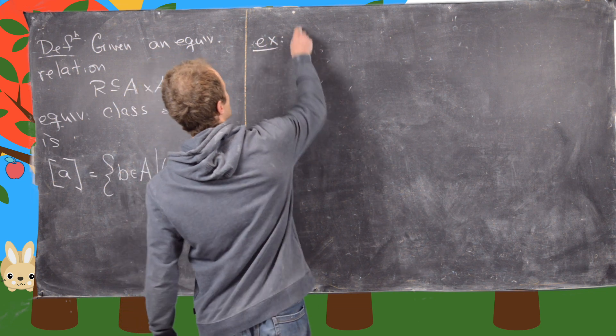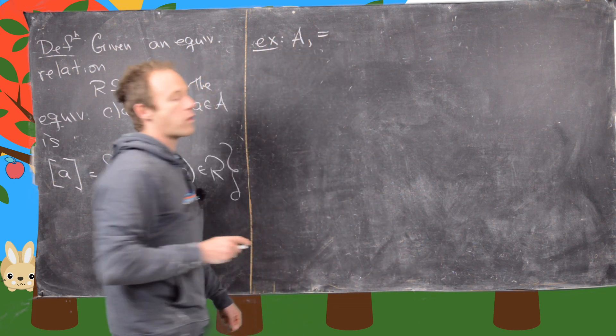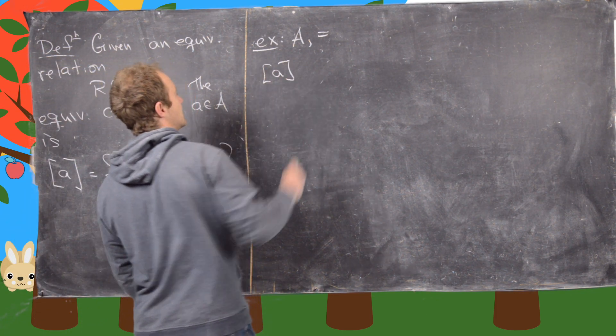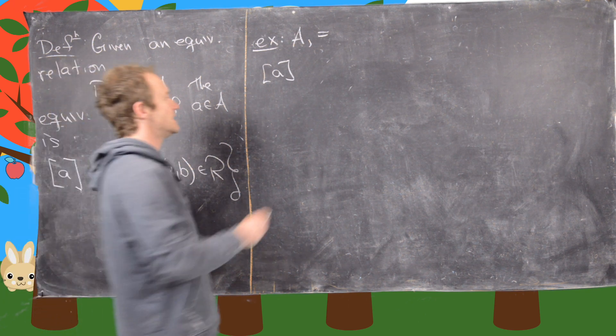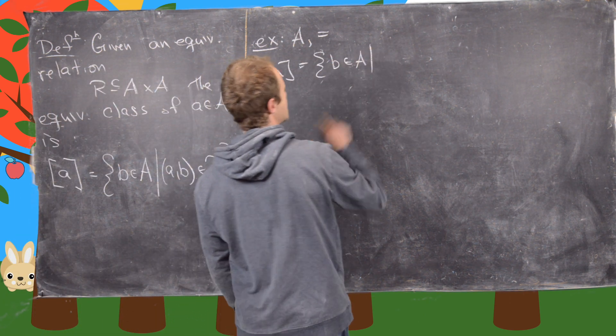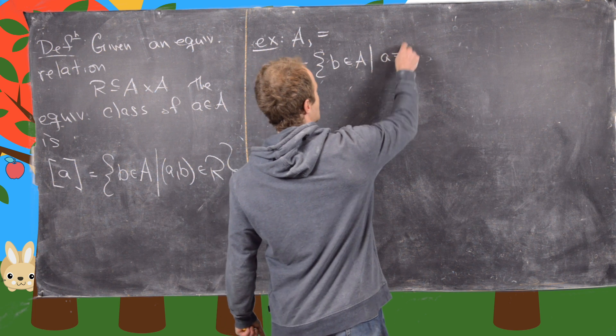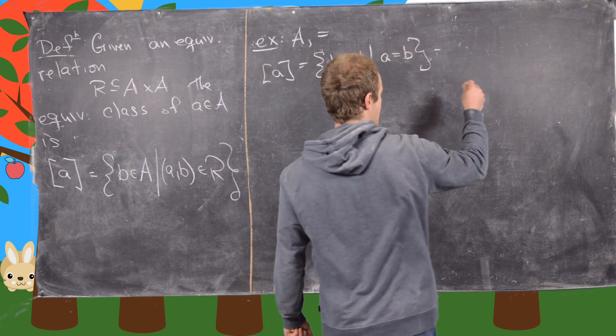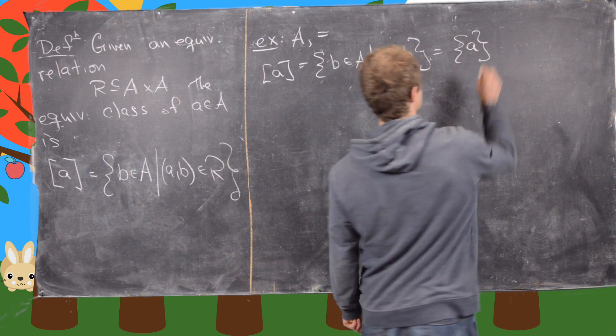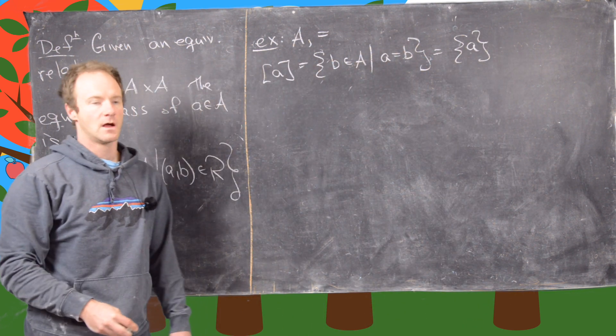So again, let's take A with equality being the equivalence relation. And now notice that the equivalence class of A in this case, well, let's write it out by the definition. So this is all B in A such that A equals B. But notice there's nothing going on here. This is just the singleton A. Okay.